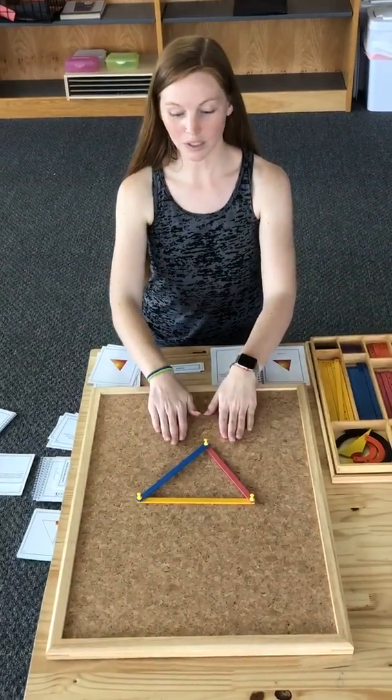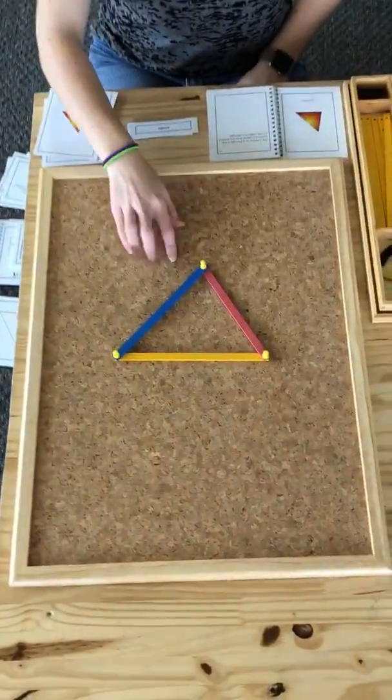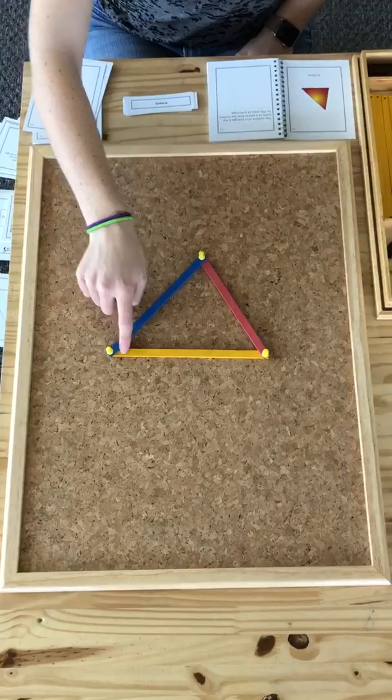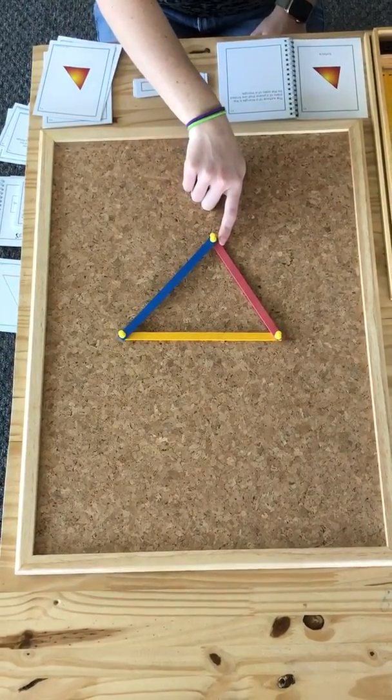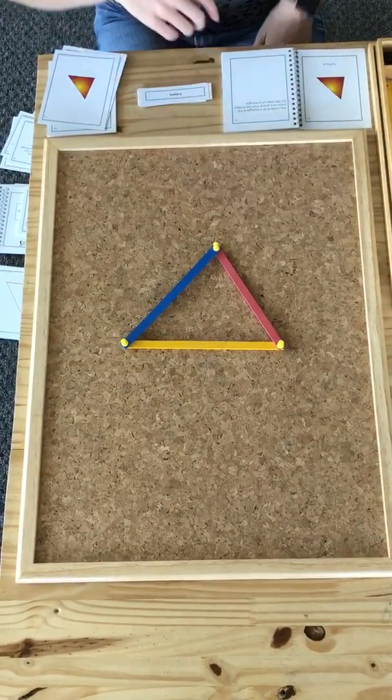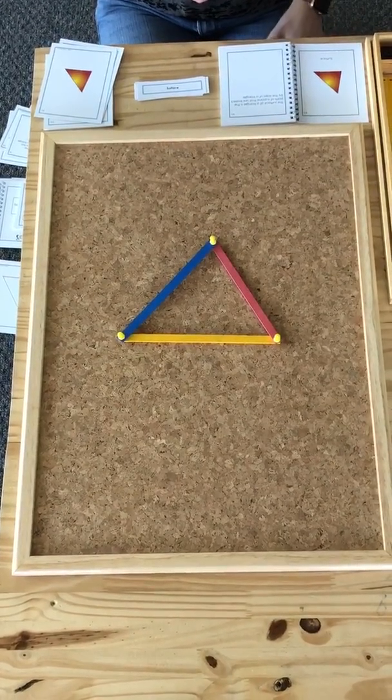So if you look here I've made a triangle already. As you know, a triangle is a three-sided closed figure. So we are going to start by identifying the parts of the triangle.